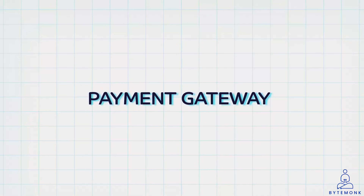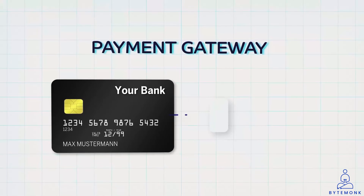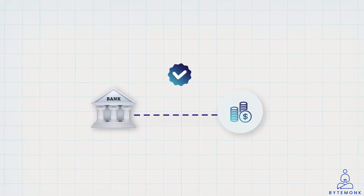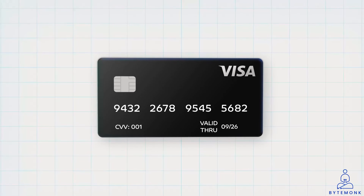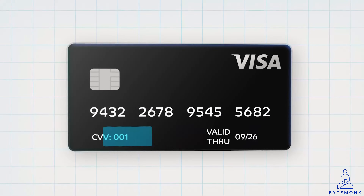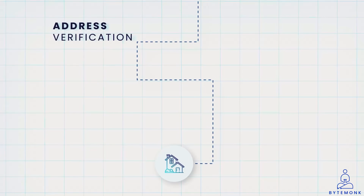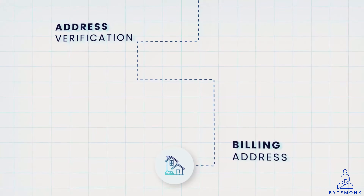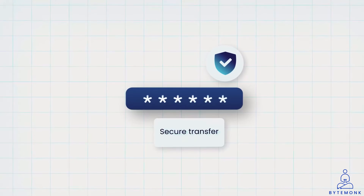The payment gateway is the first point of contact when you, the customer, initiate a card transaction online. It's like a special assistant that takes your payment information and sends it to the bank to make sure you have enough money to buy the game. It performs an initial check to ensure that the customer's payment details are correctly formatted and complete. This includes verifying the credit card number, expiration date, and the CVV or card verification value. The payment gateway may also perform an address verification to validate that the customer's billing address matches the one on record with the bank, which helps to prevent fraud. It primarily handles the authorization of the transaction and the secure transfer of payment information.